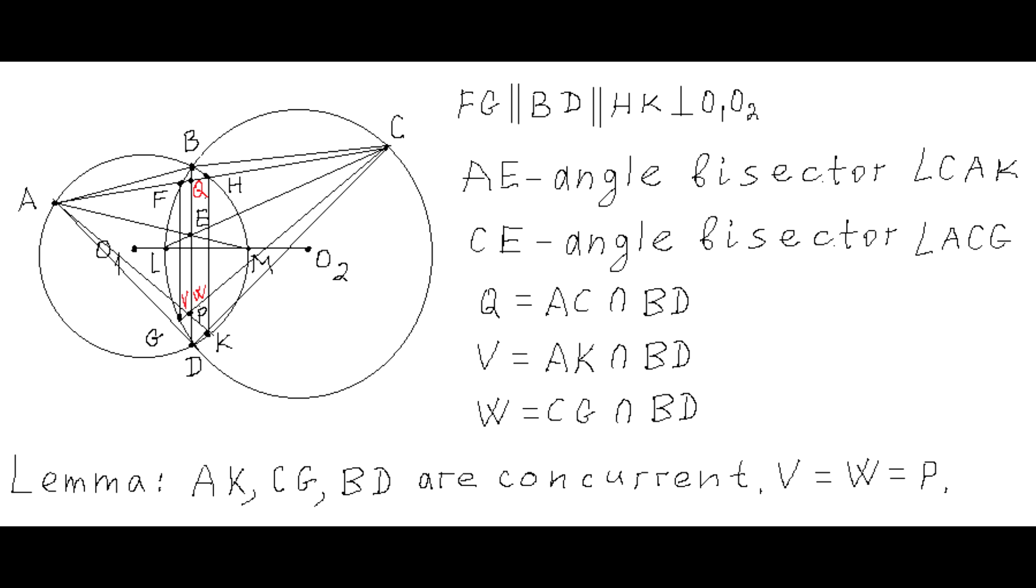We will prove the lemma that line segments AK, CG, and BD are concurrent, and they intersect in one point P with which points V and W are collocated.